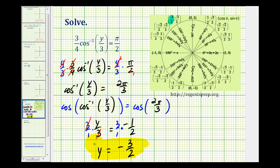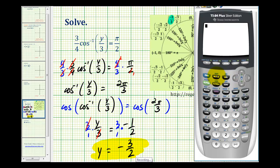Let's go ahead and check this on the calculator. Let's make sure that we're in radian mode, which we are. So now we'll type in the left side and make sure we have pi divided by two. So we have three-fourths times inverse cosine of y divided by three, and y is equal to negative three-halves. So we'll have negative three-halves divided by three, and this should equal pi over two.